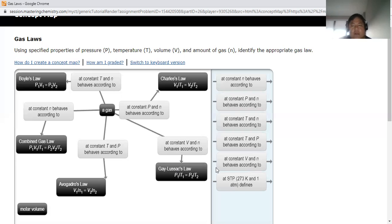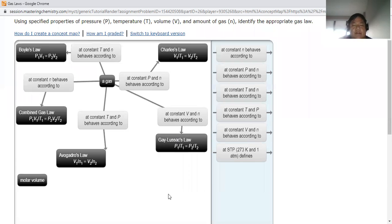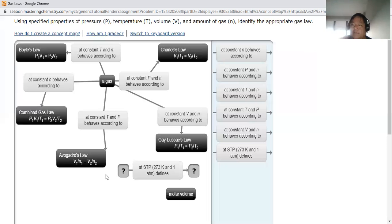All right, and finally we have molar volume. Molar volume is probably the trickiest one that you're going to have trouble relating. But it says at STP, 273 Kelvin and one atmosphere to define. If you think about STP, if you saw the other video for the homework question, this is when we bring in Avogadro's Law. Avogadro's Law at STP - because remember, Avogadro has constant temperature and pressure - so at STP we have standard temperature and pressure. So that's going to go here, and then that's going to be molar volume.